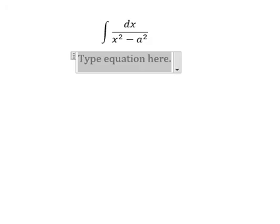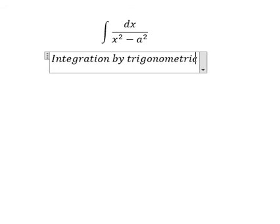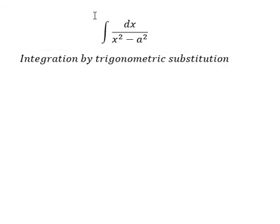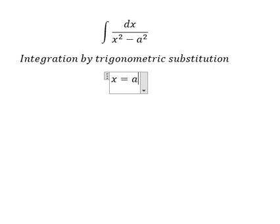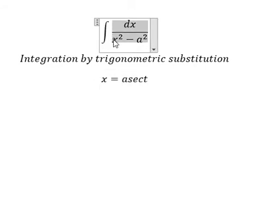We need to use integration by trigonometric substitution. I will put x equal to a sec t. The reason I need to put this is because if we substitute this in, you will get a² sec² t. With a² and a², we can do factorization: sec² t minus 1.